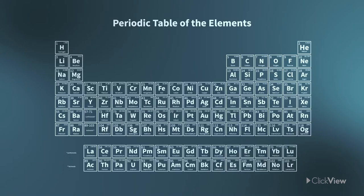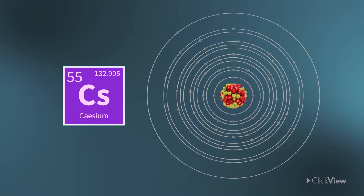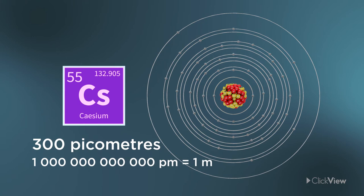The atom with the largest radius you'll find in nature is cesium, measuring about 300 picometres.